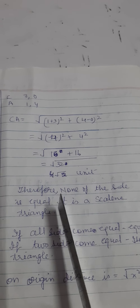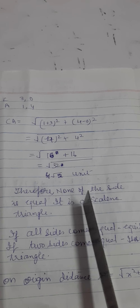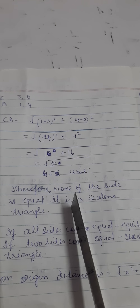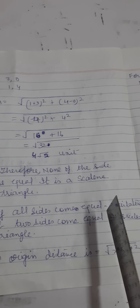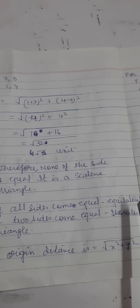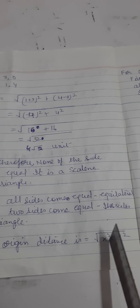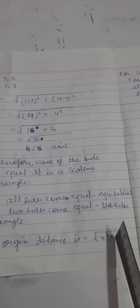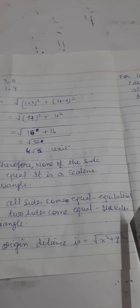Since none of the sides are equal to each other, this is a scalene triangle. If all sides were equal it would be an equilateral triangle, and if two sides were equal it would be an isosceles triangle. Also, for a point on the origin, the distance formula simplifies to √(x² + y²) since both origin coordinates are 0.